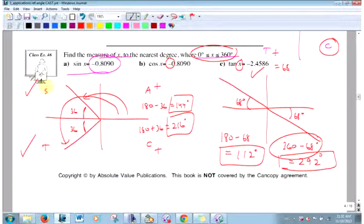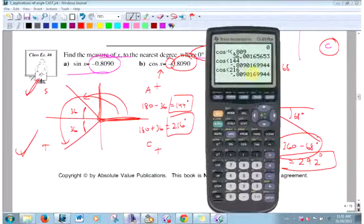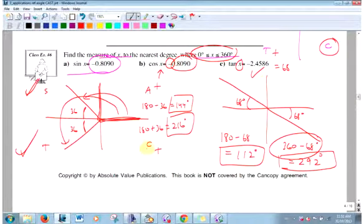I've already taken this negative into account. I know it's negative in this quadrant and this quadrant. So just to find the reference angle, just pretend you're in grade 10. What reference angle is that? In grade 10, we just found all the angles in this quadrant, right? We didn't have another option. So just put in positive 0.809.